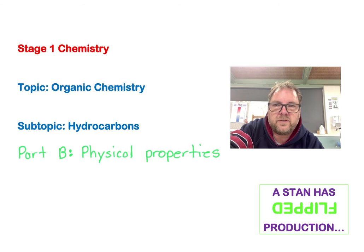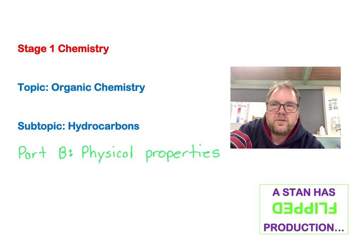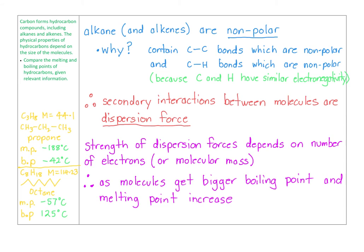A good bit of revision of secondary interactions. Let's get into it. Alkanes and alkenes are both non-polar. Why are they both non-polar? Well, they contain C-C bonds which are non-polar because both carbon atoms have the same electronegativity, so the shared pair of electrons sit equally between the atoms—there wouldn't be one with more charge than the other. And C-H bonds are also non-polar because carbon and hydrogen